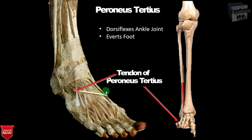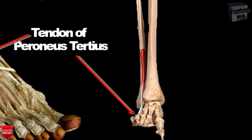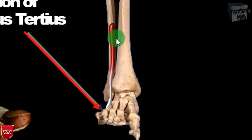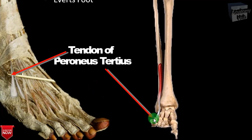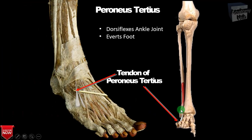The peroneus tertius muscle takes origin from the lower one-fourth of the anterior surface of the fibula and the interosseous membrane. Its insertion is on the medial side of the dorsal aspect of the base of the fifth metatarsal bone. Its nerve supply is the deep peroneal nerve, and its action is dorsiflexion of the foot at the ankle joint and eversion of the foot at the subtalar joint.